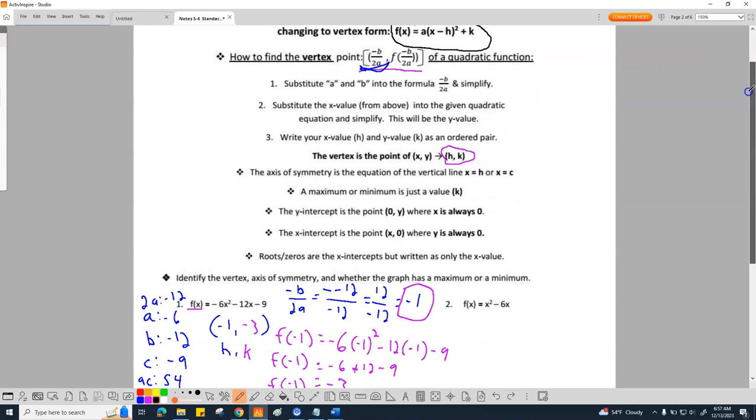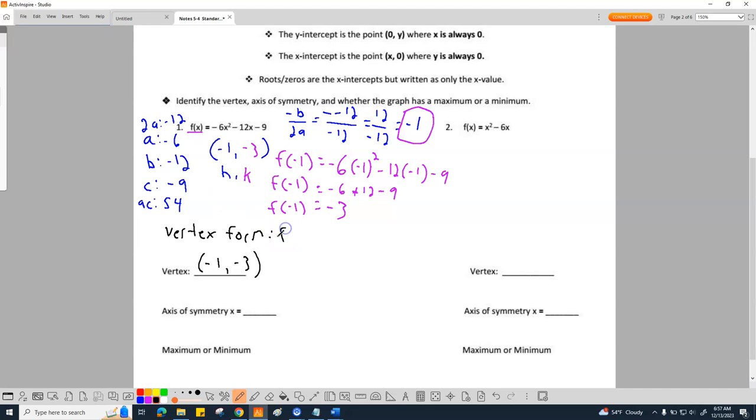I'm going to go ahead and write my vertex form. F of X equals A is the first one, which in this case we use our original A, which is negative 6. For those wondering where I got it from, that's right up here. Now we have our X.